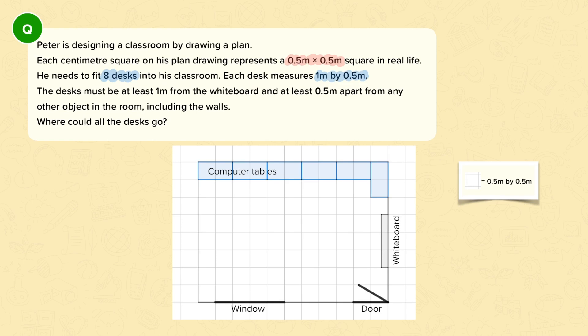We're also told that the desks have to be at least one meter from the whiteboard and at least 0.5 meters apart from any other object in the room. So that's these computer tables, the door, the window, and including all of the walls. So it has to be at least 0.5 meters away from all of those.